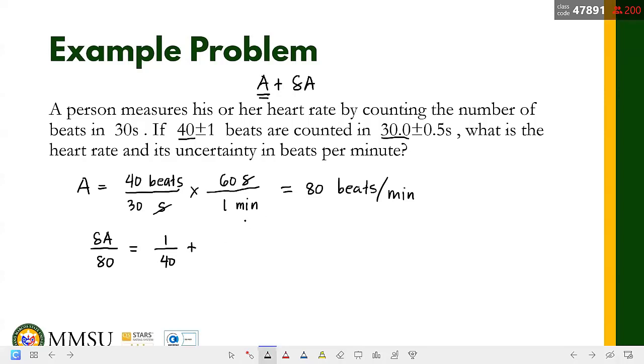Ito dapat in minutes kasi naka-minutes ito, beats per minute. So yung 30 seconds in minutes, that's 0.5, tama? Yung 30 seconds, di ba alam natin that 1 minute is 60 seconds, so this is 0.5 minutes. Tapos yung 0.5 seconds, i-divide natin ng 1 over 60. So that's 0.5 divided by 60. Naka-minutes lahat.